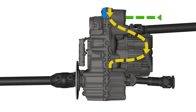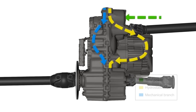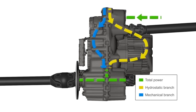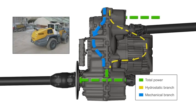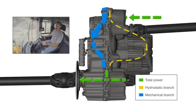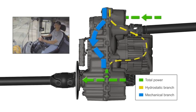The power supplied by the diesel engine is split via a planetary gearbox to a hydrostatic branch and a mechanical branch. The two branches are then combined again, so that full performance is available to the drive.